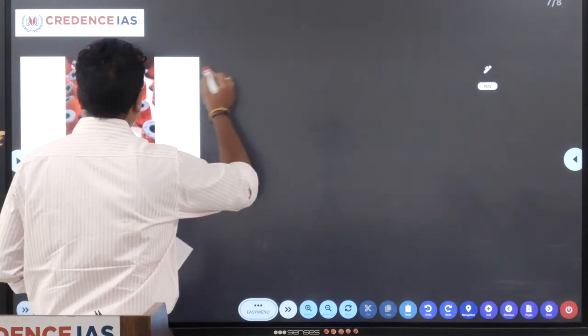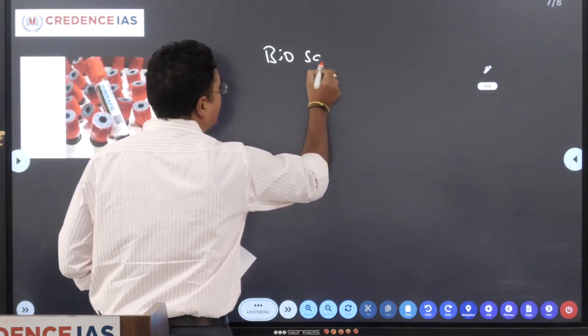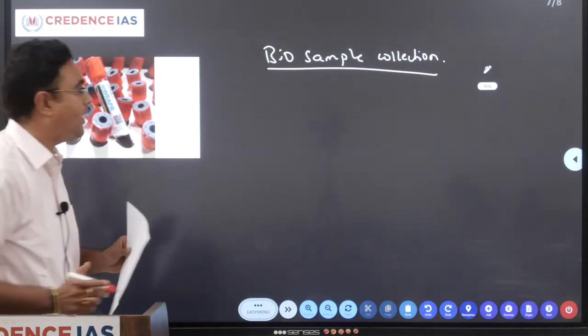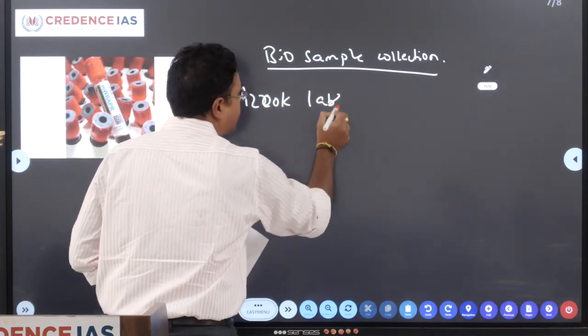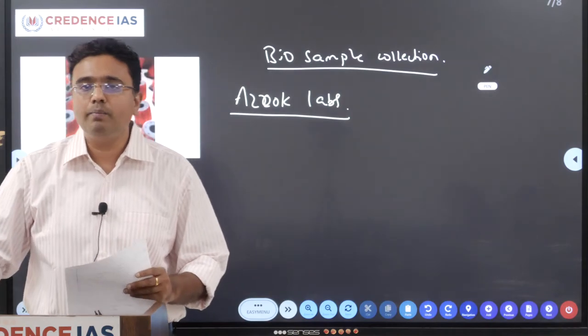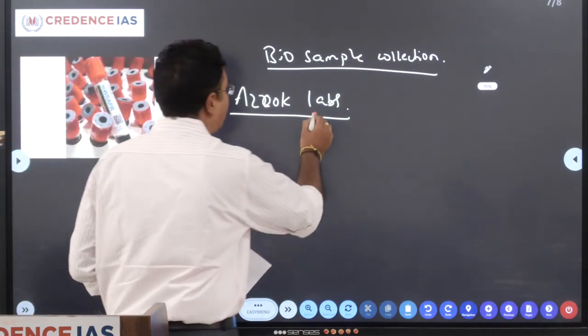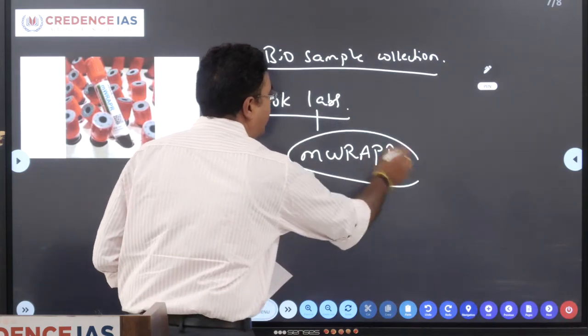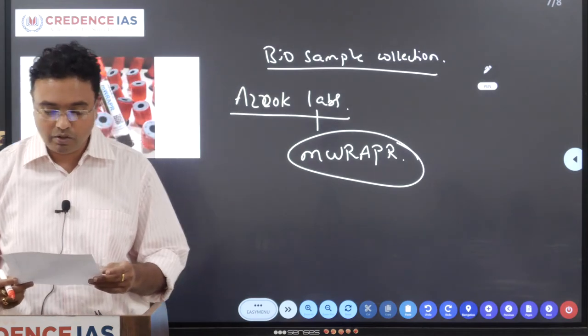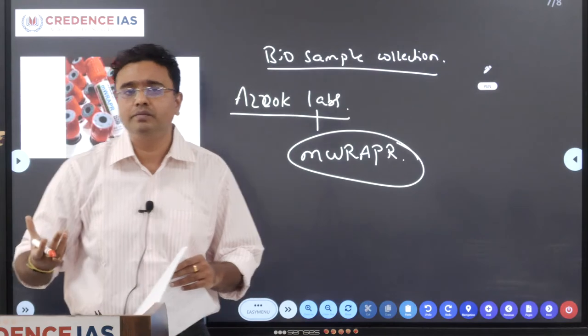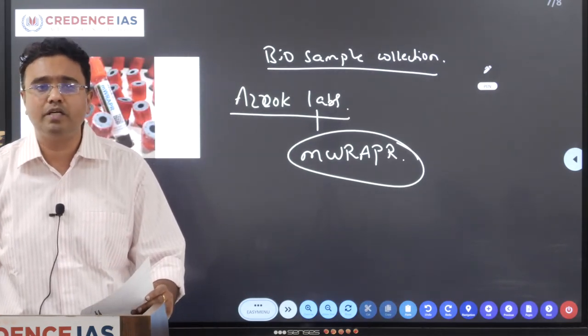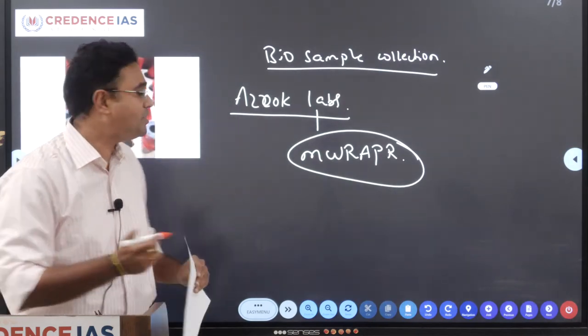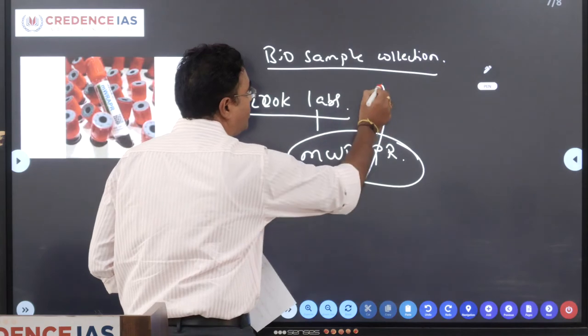Moving on to the next important aspect, that is bio sample collection method. This method was designed by a company called Azogue Labs. It is incubated by Indian Institute of Science. This company, a biomedical company, a biotechnology company has devised a bio sample collection method called M-wrapper, which is used for bio sample collection methodologies. This bio sample collection methodology can be used for various purposes - for storage, for transportation, for medical research, for genome sequencing in labs, for various applications. It is the first indigenously developed bio sample collection method in India.